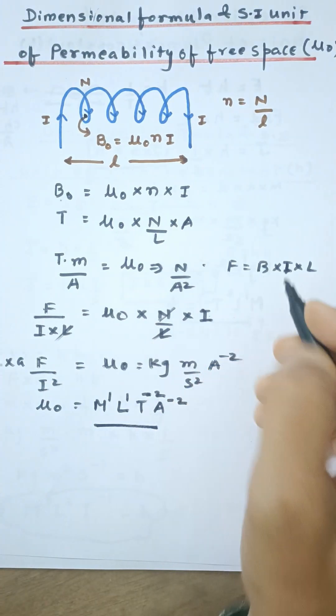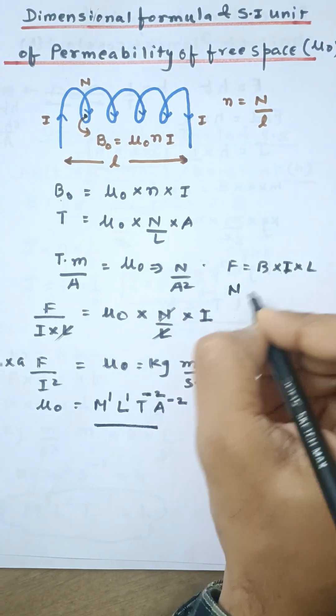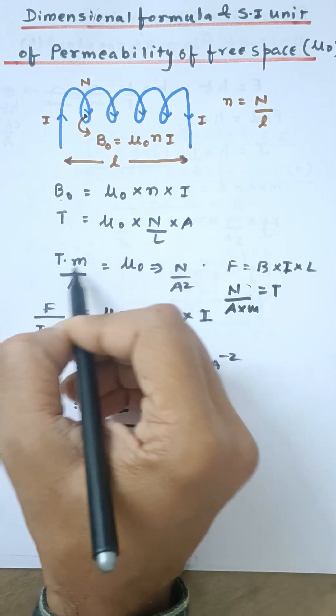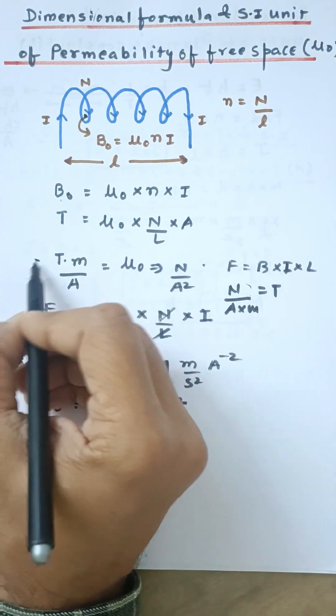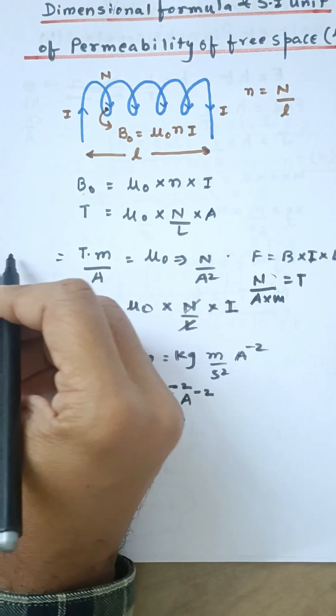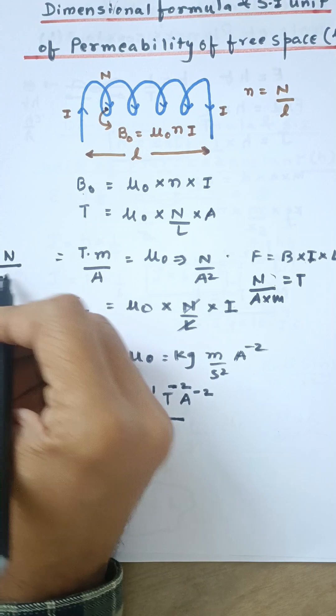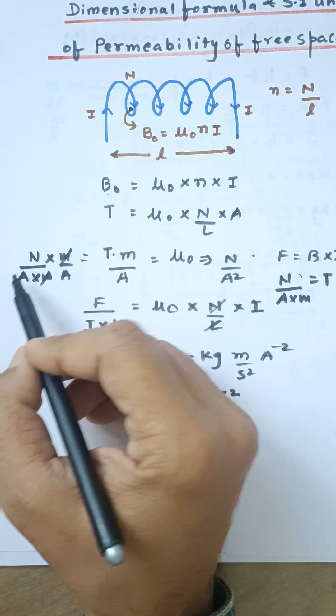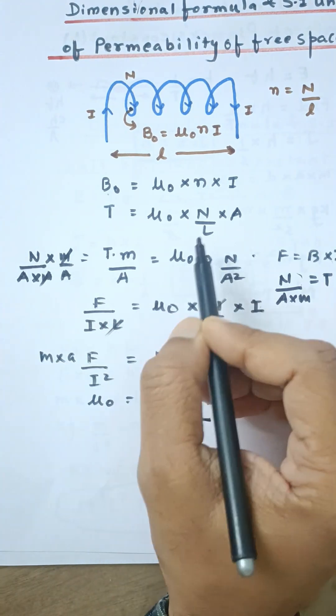From this formula, the Tesla can also be written as Newton upon ampere into meter, that is Tesla. Now this Tesla, I am going to use it over here. So instead of this Tesla, I am going to write down Newton upon ampere into meter, and thus into meter upon ampere stays. So we get Newton upon ampere square again as the SI unit.